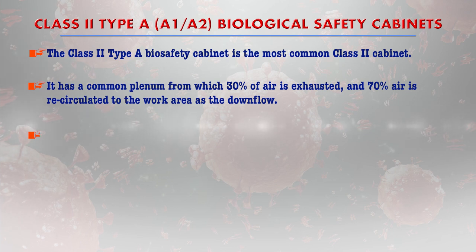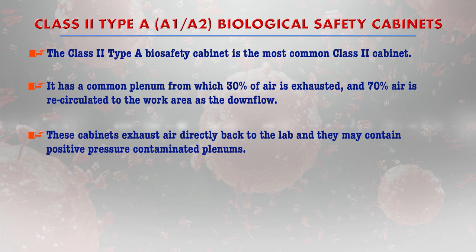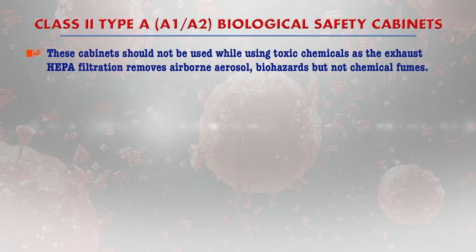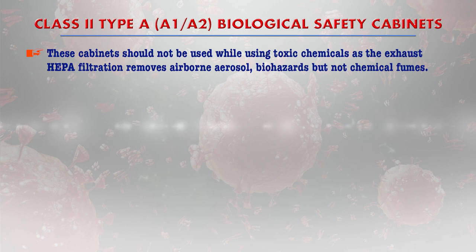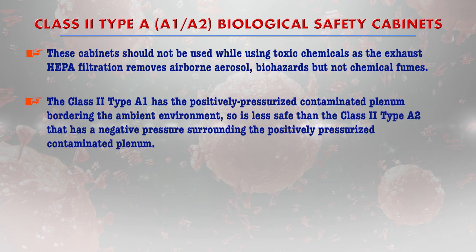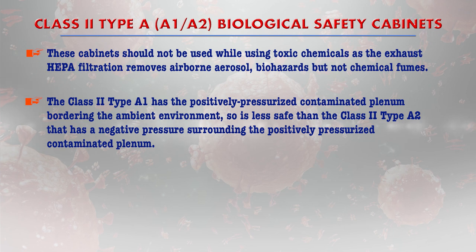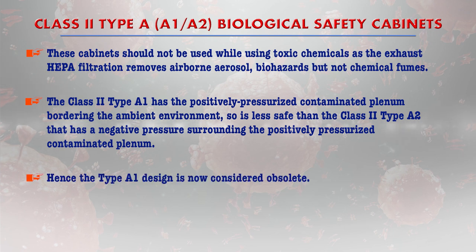Class 2 type A cabinets exhaust air directly back to the lab and may contain positive-pressure contaminated plenums, so they should not be used with toxic chemicals, as exhaust HEPA filtration removes airborne aerosol biohazards but cannot remove chemical fumes. The class 2 type A1 has a positively pressurized contaminated plenum bordering the ambient environment, making it less safe compared to type A2, which has negative pressure surrounding the positively pressurized contaminated plenum. Hence, the type A1 design is now considered an obsolete model.